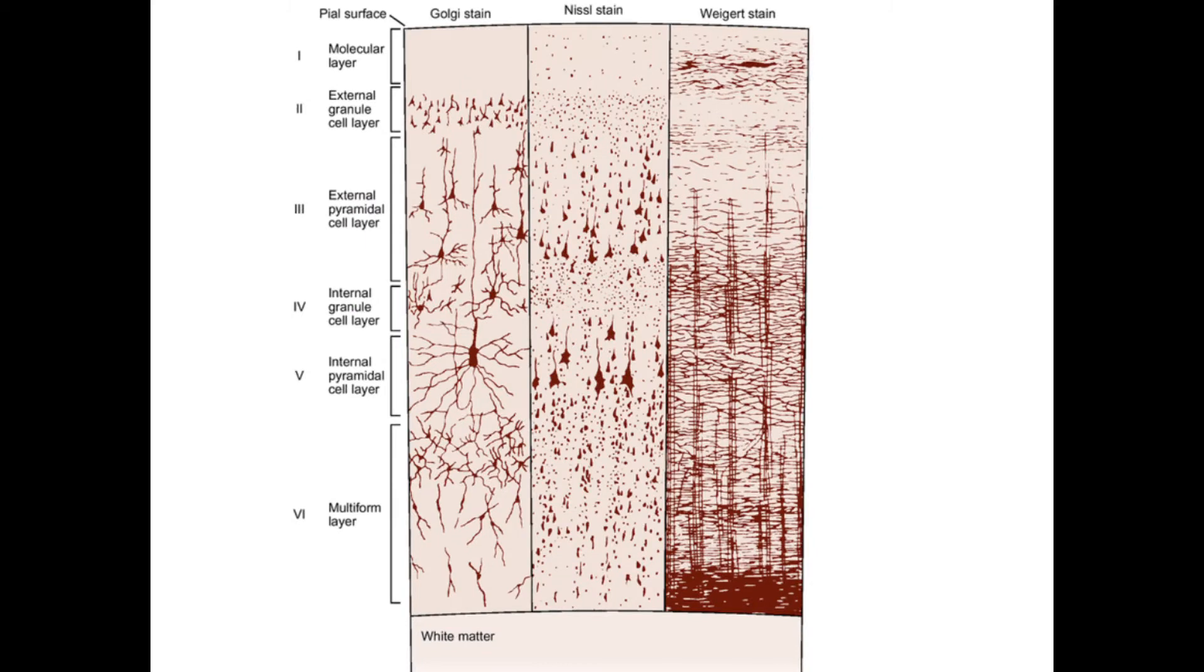This is another image of the six layers, and why I show this? Because I want you to see the names. Each layer has a name. You have a molecular layer, external granule layer, external pyramidal layer, internal granule, and internal pyramidal and multiform.